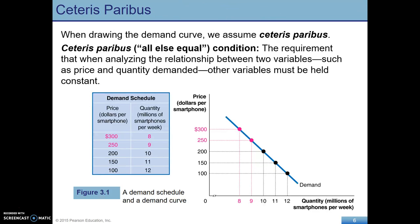When we draw the demand curve, we are making one significant assumption. We call it ceteris paribus — it just means everything else being equal. When we're looking at two variables like price and quantity demanded, all the other variables we're holding constant: the prices of all other related goods and services, taste, consumer preferences, and the expectation about future price.